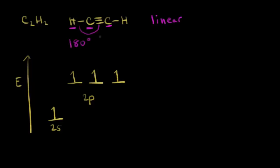We must have a different hybridization for this carbon. We have a different geometry, a different bond angle, and a different number of atoms that this carbon is bonded to. To find our new type of hybridization we look at our electron configuration already in the excited state. We have carbon's four valence electrons represented here in the excited state: one, two, three, and four.